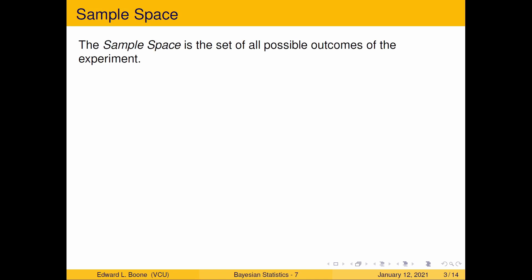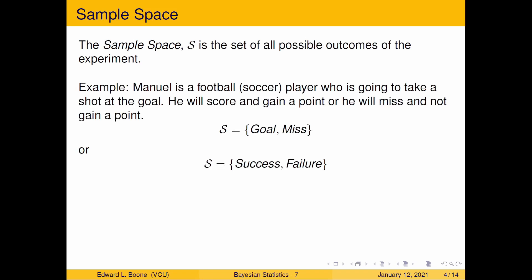The first idea is the idea of a sample space. The sample space is the set of all possible outcomes of an experiment — everything that could happen from your experiment. More specifically, it's everything that you're looking for to happen out of it. For example, Manuel is a football player who is looking to take a shot at a goal. He will either score and gain a point, or he will miss and not gain a point. So our sample space is: he'll score a goal or he'll miss — success or failure.